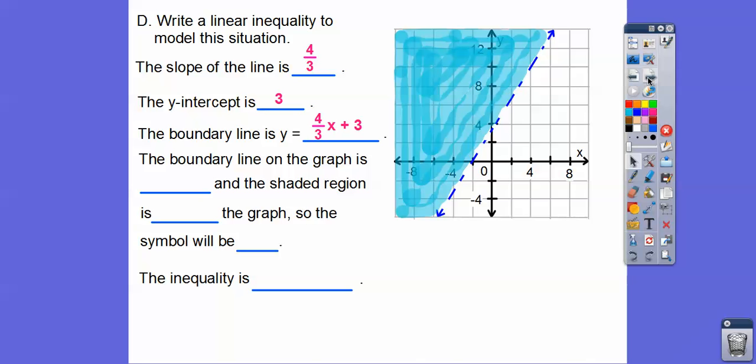So the boundary line on this is a dotted line, or the book calls it a dashed line right there. And the shaded region is this shaded region. If I had to say it's above or below the line, this side over here, I would say it's above the line right there.